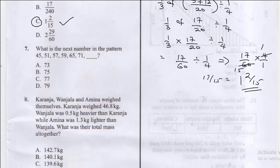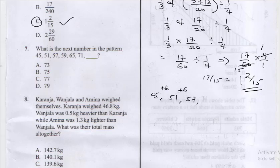Question seven says what is the next number in the pattern? So we have 45. The next number is 51. Let's see what's the pattern. This is 45, notice there's a difference of 6. Now the next number is 57, notice there's also a difference of 6.